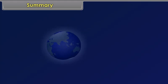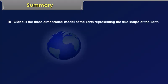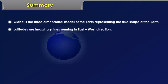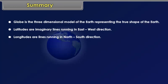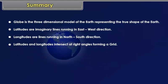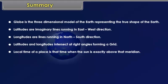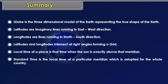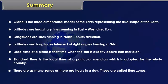Summary: A globe is the three-dimensional model of the earth representing the true shape of the earth. Latitudes are imaginary lines running in the east-west direction. Longitudes are lines running in the north-south direction. Latitudes and longitudes intersect at right angles forming a grid. The local time of a place is that time when the sun is exactly above that meridian. Standard time is the local time of a particular meridian adopted for the whole country. There are as many time zones as there are hours in a day — these are called time zones.